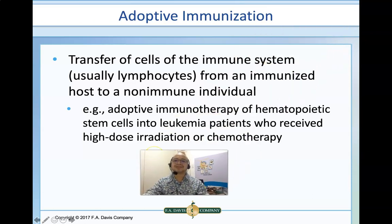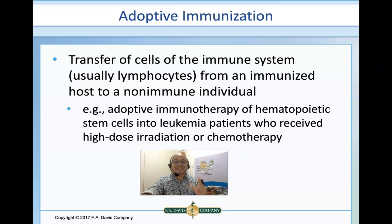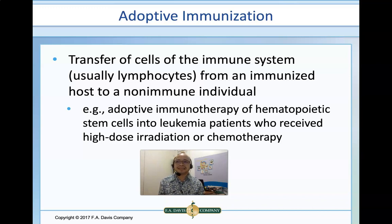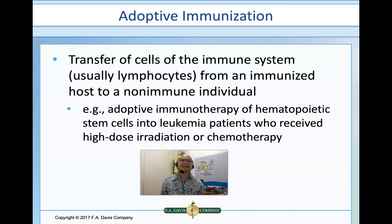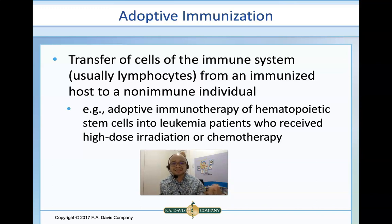In adoptive immunization, we do not transfer antibodies but instead transfer cells of the immune system — particularly lymphocytes — from immunized hosts to non-immune individuals. For example, a leukemic patient who undergoes high-dose irradiation or chemotherapy may have aplastic bone marrow no longer capable of producing immunocompetent lymphocytes, making them immunocompromised. We can help these people by transferring lymphocytes to them. That is an example of adoptive immunization.